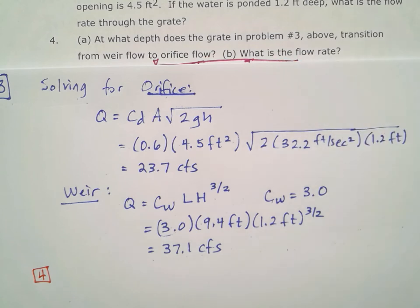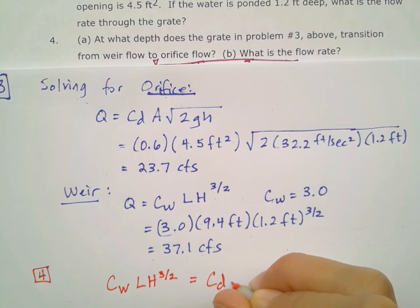The way we're going to do that is set the weir flow equation equal to the orifice flow equation. So, weir flow is C_W L H^(3/2) for the flow rate, and orifice flow is C_D A √(2gH).